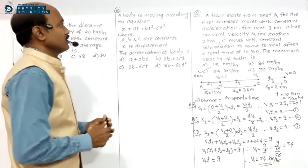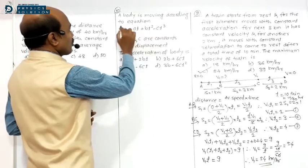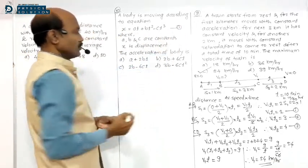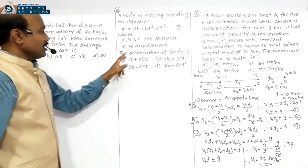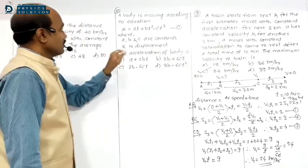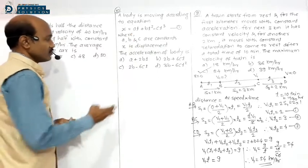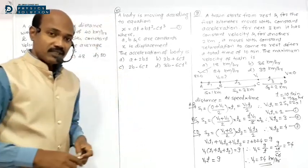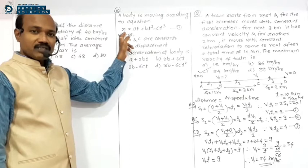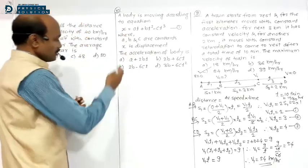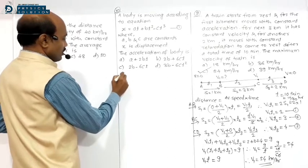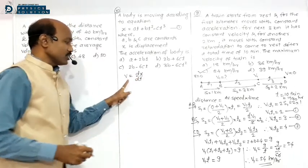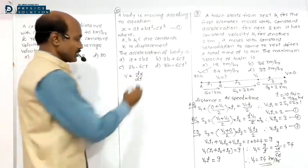This is a slightly different type of numerical. The equation given is for displacement. We need to find acceleration. Acceleration means rate of change of velocity, and velocity is found as rate of change of displacement. So velocity V = dx/dt.